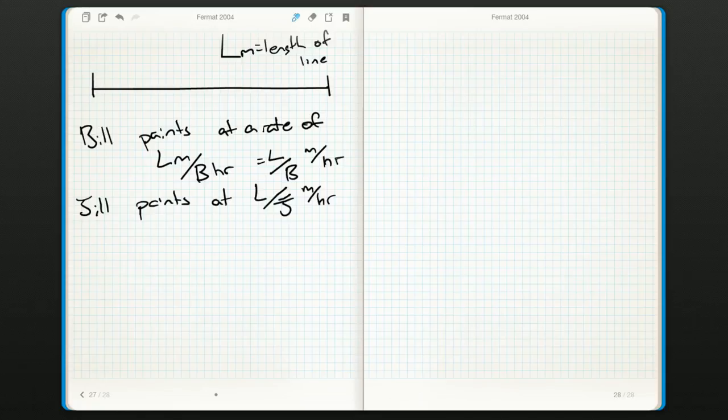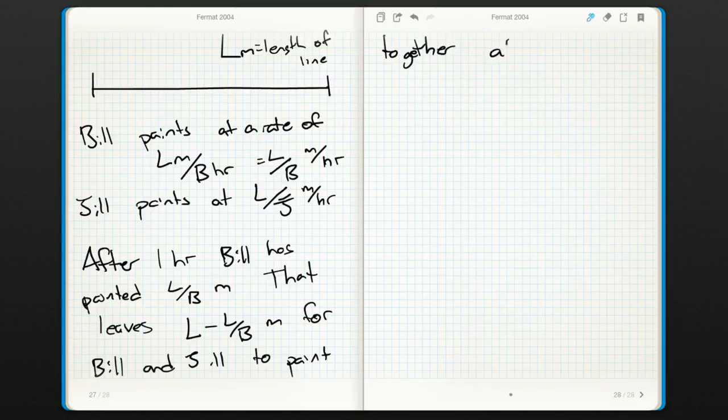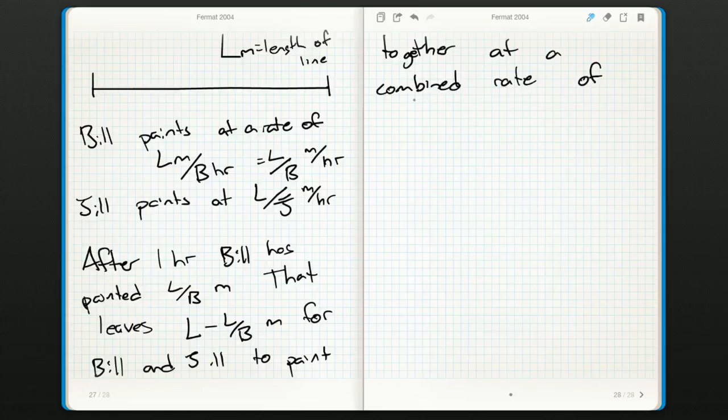Bill starts painting by himself for an hour. After one hour, Bill has painted L over B meters, because he just multiplied this by one hour. And that leaves L minus L over B meters for Bill and Jill to paint together. And if they're both painting, that would work at a combined rate of L over B meters per hour plus L over J meters per hour.